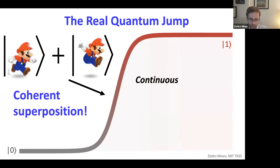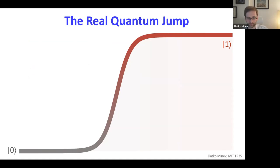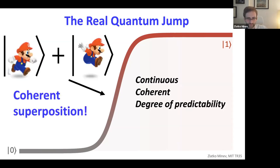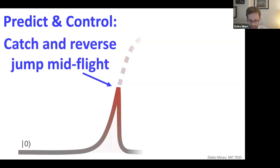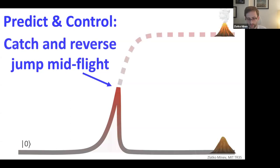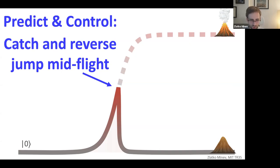On the short run, the jumps are continuous, coherent, and even deterministic — they have a degree of predictability despite the very randomness in quantum physics. You can take these unique features — coherence, predictability, and continuity — and exploit them to develop a fast feedback scheme to seize control of the jump and intervene in real time in its very dynamics, reversing it before it has ever had a chance to occur, thus eliminating quantum jumps altogether.